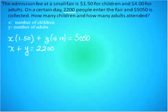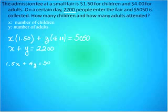So I have x plus y equal to 2,200. And the first equation is 1.5x plus 4y equal to 5,050, and the second is x plus y equal to 2,200. We're going to use one of our methods to solve this — elimination, substitution, or graphing.